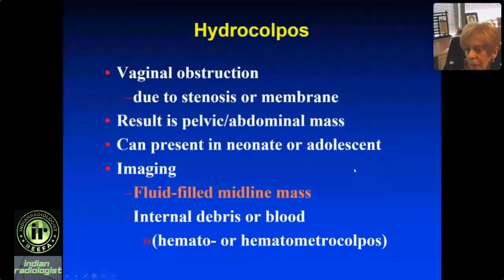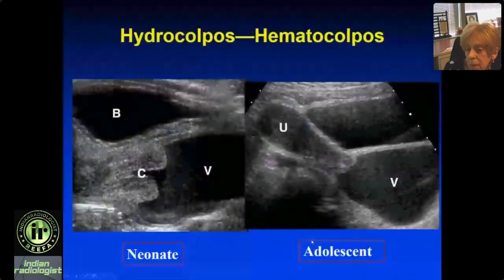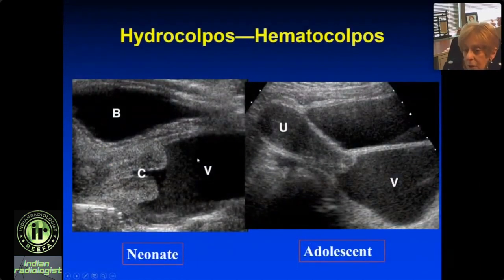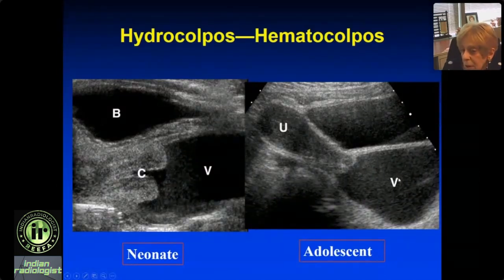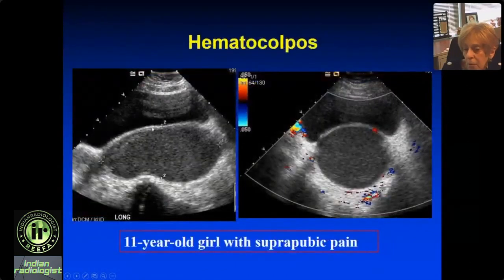Uterine masses: cystic is hydrocolpos, solid is rhabdomyosarcoma. Hydrocolpos is vaginal obstruction due to stenosis or a membrane, resulting in a pelvic or pelvic-abdominal mass. We see it in neonates and adolescents — it's simply a distended vagina. If it has blood it's called hematocolpos, and occasionally you see blood in the uterus: hematometrocolpos. A neonate with a distended vagina had an imperforate membrane. An adolescent with pain every month and no periods: distended vagina — the vagina distends, the uterus is normal — imperforate membrane, hematocolpos.